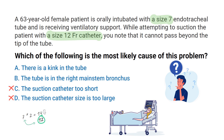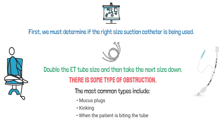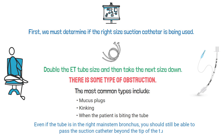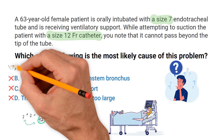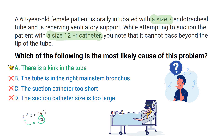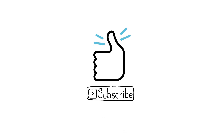Whenever you are unable to pass a suction catheter down the ET tube, it usually indicates some type of obstruction. The most common types include mucus plugs, kinking, or the patient biting the tube. Even if the tube is in the right main stem bronchus, you should still be able to pass the suction catheter beyond the tip. Therefore, the correct answer is A: there is a kink in the tube.